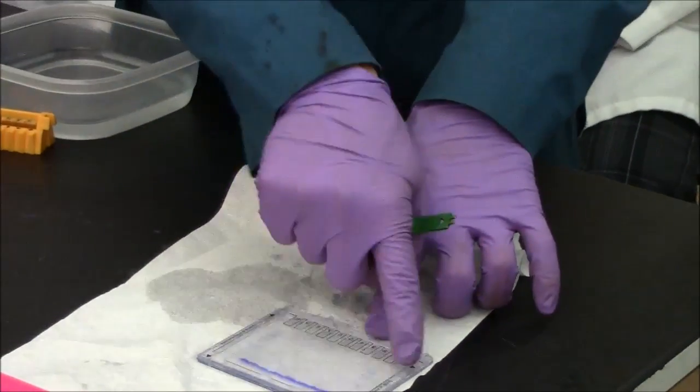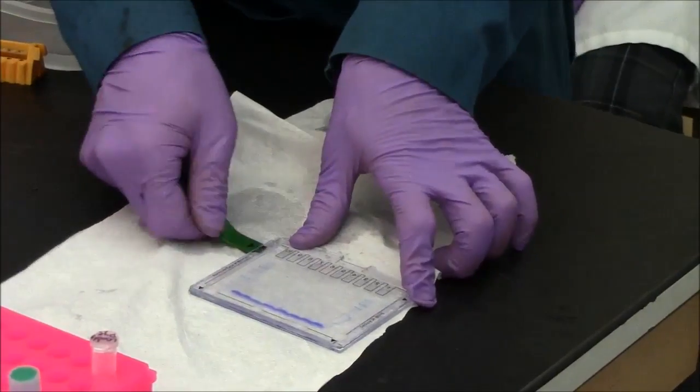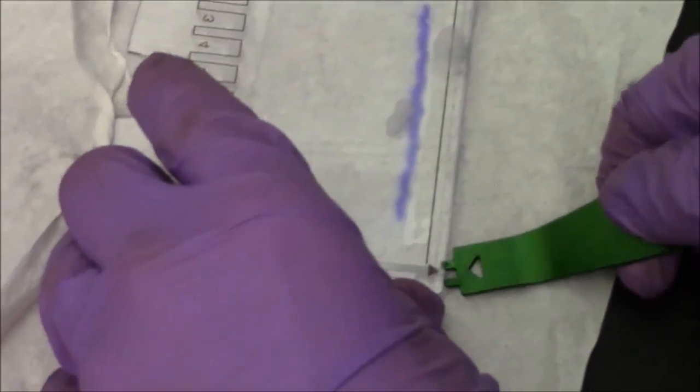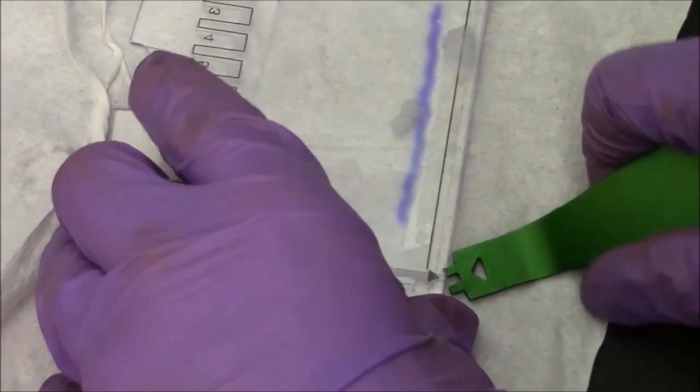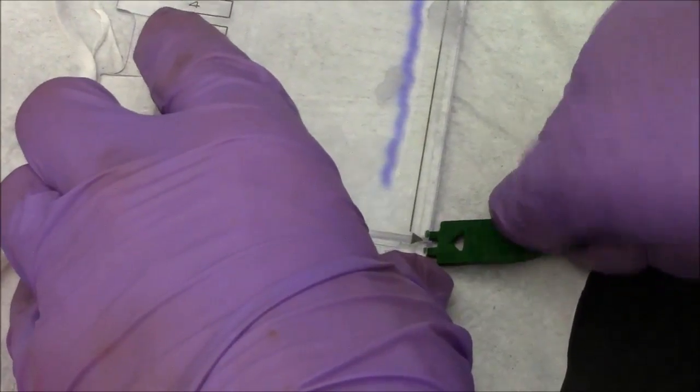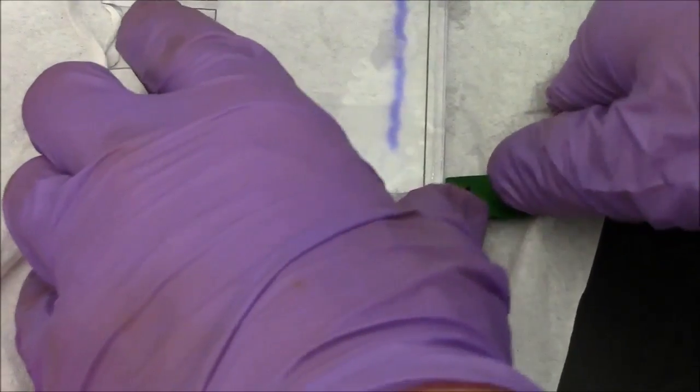The Biorad gel is in a cassette with four black triangles, and a special tool comes with the Biorad gel. You want to jam the tool in where the triangle is, and then give a brief twist, and you'll hear a snap as the plates are detaching from each other.